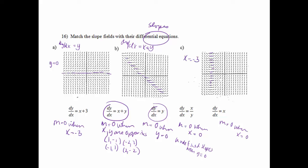So the one that we decided have slope of 0 when x equals negative 3 was the first one. So we'll have dy/dx equals x plus 3. And we have now matched those slope fields with their differential equations.